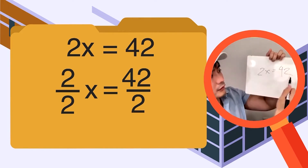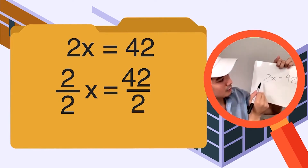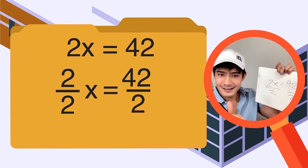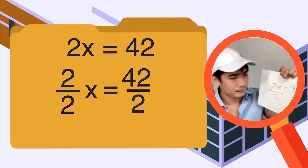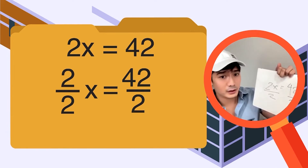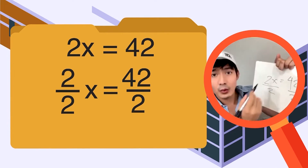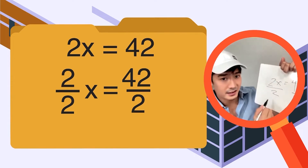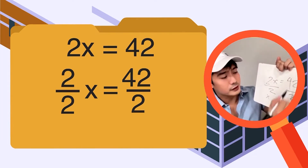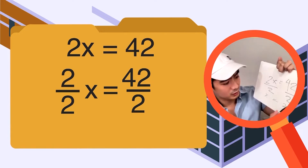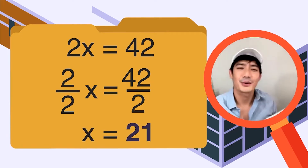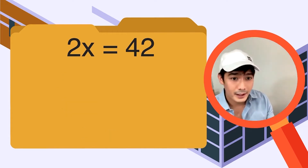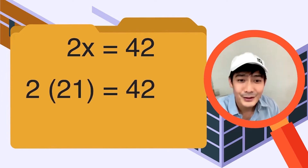2x divided by 2 — isolate natin ito — divided by 2, divided by 2. So that's what we get: 2x divided by 2 is equal to 42 divided by 2. 2x divided by 2 is equal to 1 — 1 times x is just x. 42 divided by 2 is 21. x is equal to 21. Sa ating original equation, check natin: 2 times 21 is 42. 42 is equal to 42. Tama!